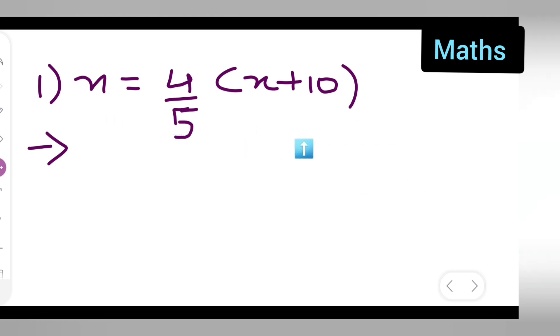x equals 4 upon 5 into x plus 10. How are you going to do this? First write x equals as it is 4 upon 5. You all will multiply with x along with 10. So what you will do is write down x equals 4 upon 5 into x plus 4 upon 5 into 10.